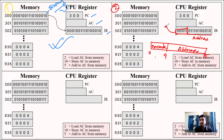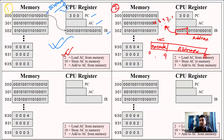For example, we will convert to decimal. The information is in decimal. Load AC from memory is opcode 2. Store AC to memory is opcode 10. Add to AC from memory is opcode 5. This is the 5-bit opcode field.